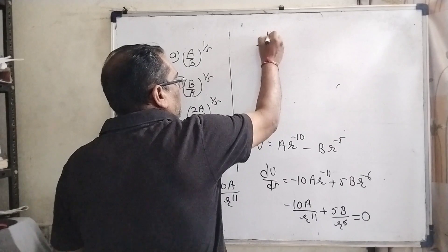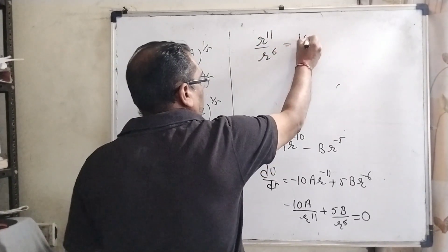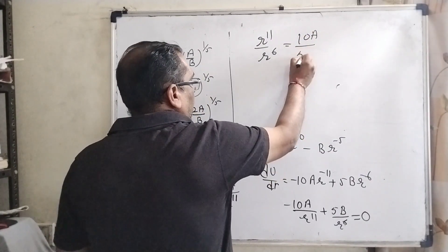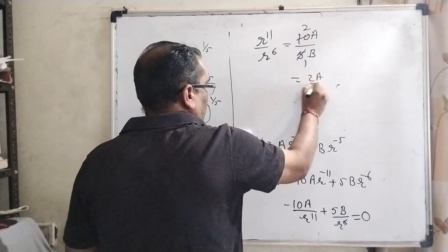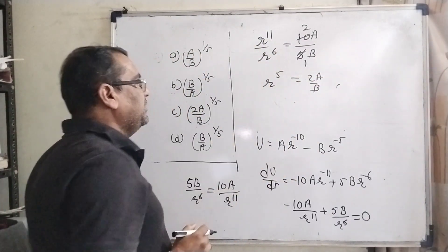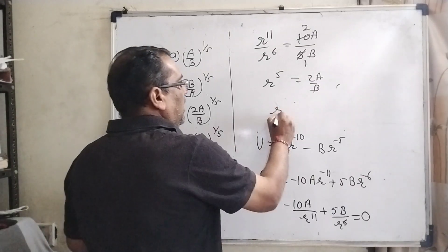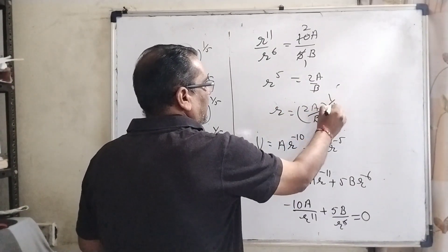Now r raised to power 11 by r raised to power 6 is equal to 10 A by 5 B. Then 5 and the 10, 2 A by B. Then r raised to power 11 minus 6 means r raised to power 5. Then r becomes 2 A by B raised to power 1 by 5.